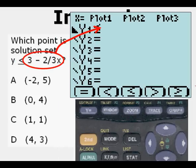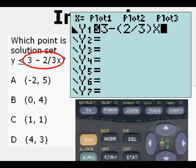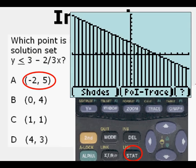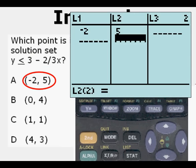We actually put it first, the expression on the right, into Y1, and then graph it. We see a solid boundary line. We see a shaded area below it.